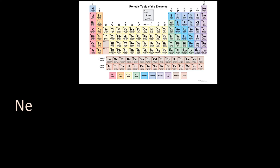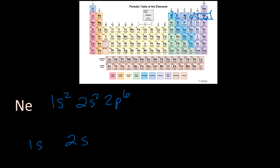Neon is in the second energy level and it has 10 electrons. We know 1s² is full, we know the 2s is full, and we have one, two, three, four, five, six — so it is 2p⁶. In the box method it is 1s, 2s, 2p.